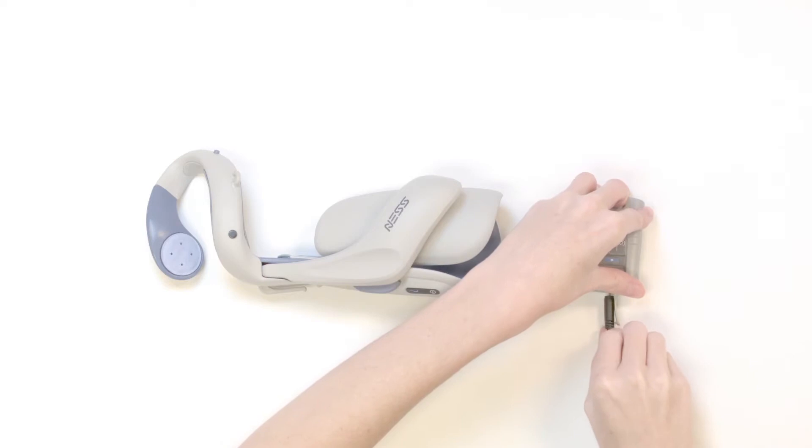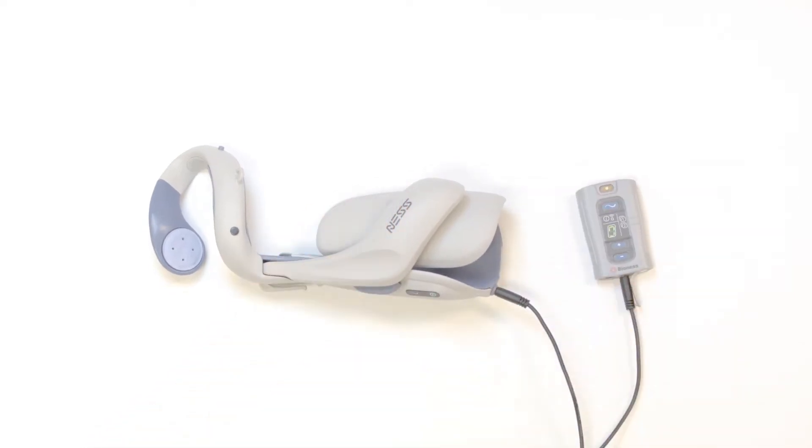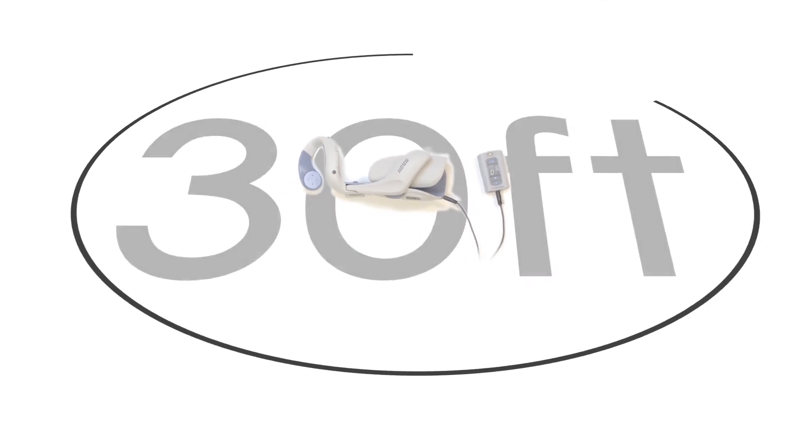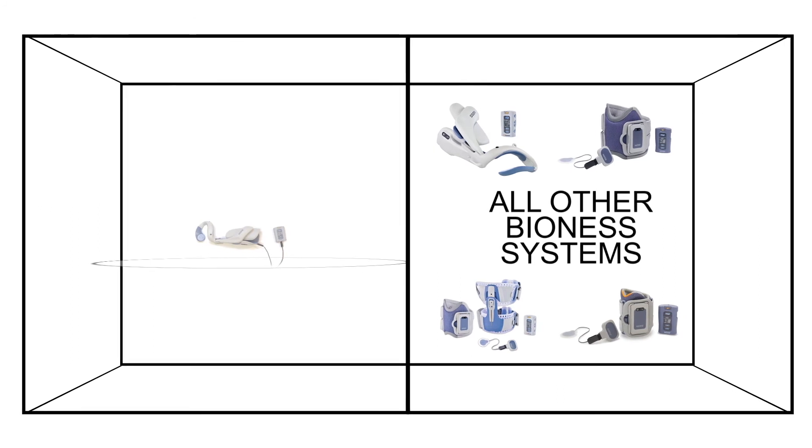First, confirm you have the correct H200 wireless components and plug them in so that they are charging. Next, make sure your H200 system is 30 feet away from any other Bioness systems. Put them in another room. It's important not to link your components to another system.